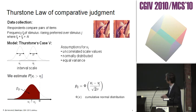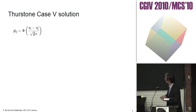So it's the cumulative normal distribution.